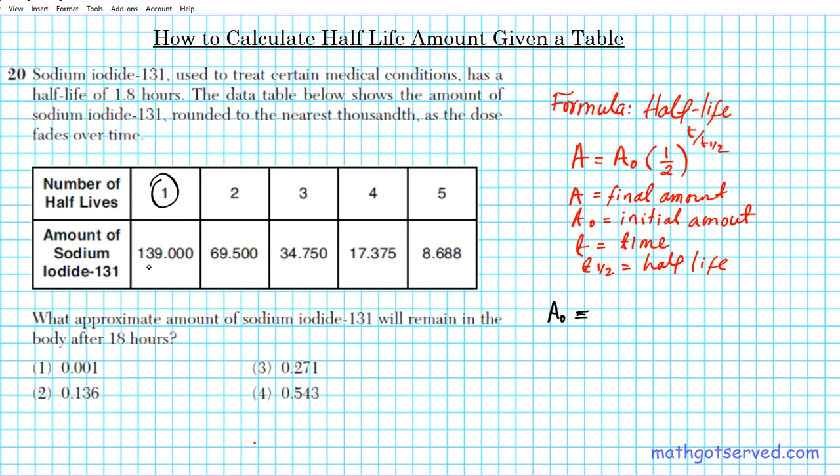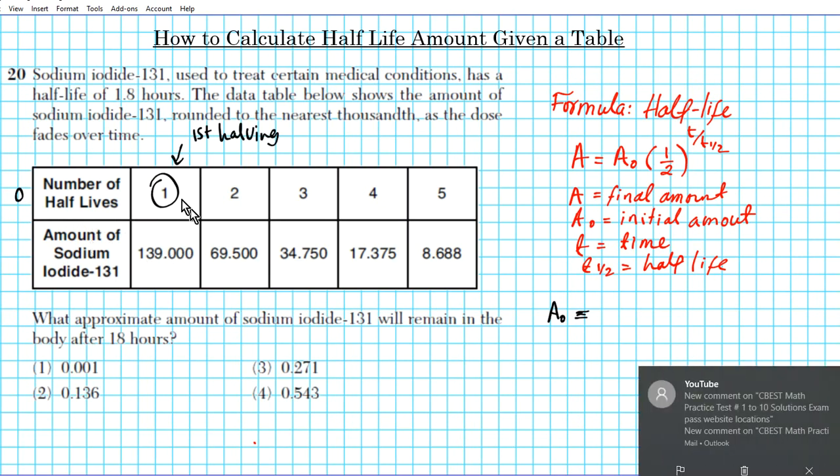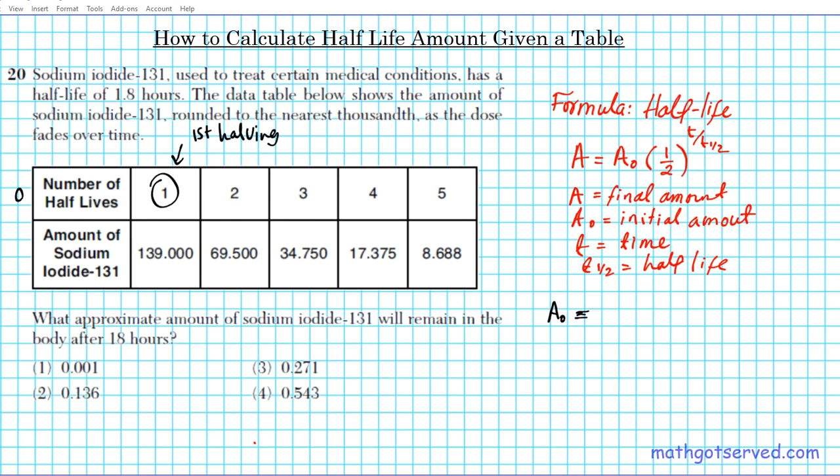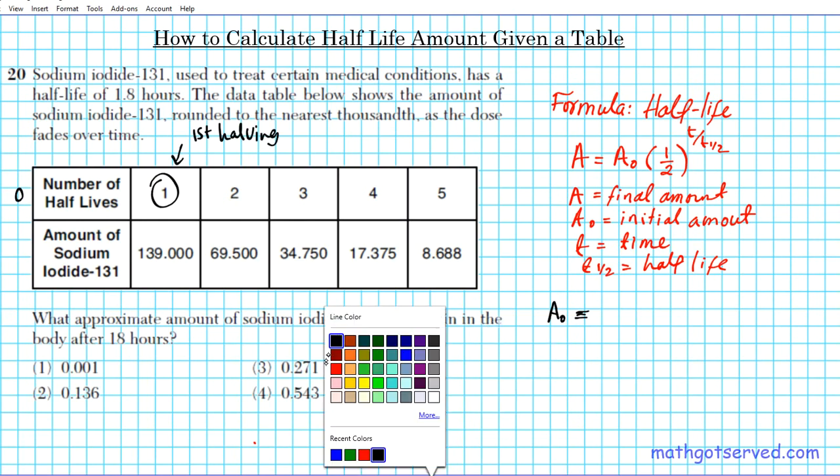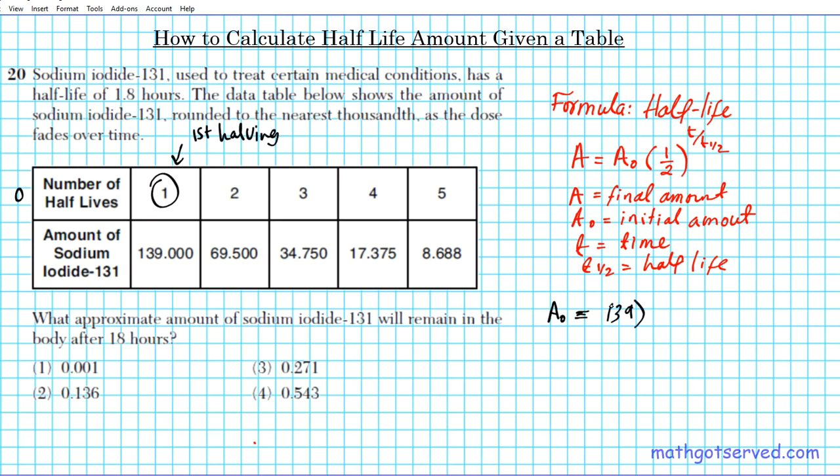It says number of half-lives: after the first half-life, there's 139. After the first half-life, so can you figure out what the initial amount is? The answer is yes. If you divide something by 2 and you get 139, how do you undo that division by 2? To undo division by 2, you simply multiply by 2, because the inverse of division is multiplication.